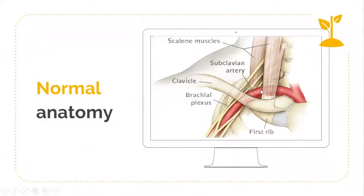The thoracic outlet is a potential space between the anterior and medial scalene muscles, with the base being the first rib. Through this potential space, the subclavian artery and the lower trunk of the brachial plexus pass. Whenever there is occlusion to the artery, there will be obliteration of the radial pulse.